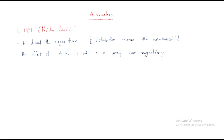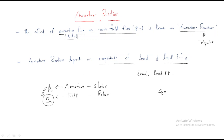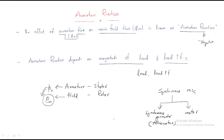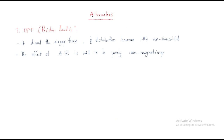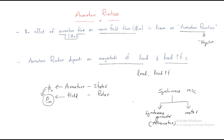Synchronous machines are of two types: synchronous generator and synchronous motor. The synchronous generator is also called an alternator. We will now discuss how armature reaction is affected in an alternator. As mentioned, armature reaction depends on two things: the load and the load power factor.